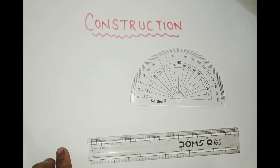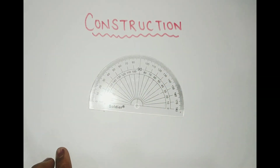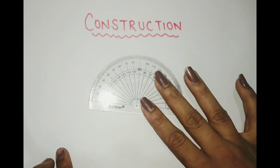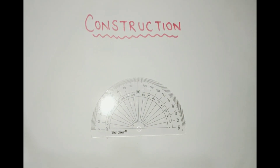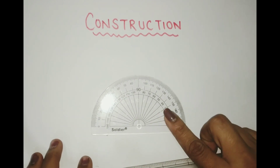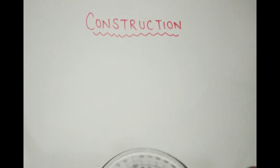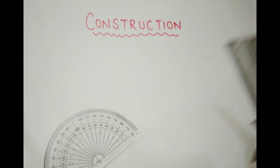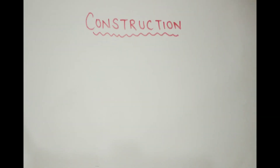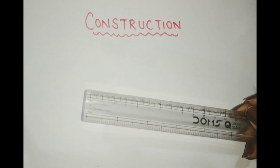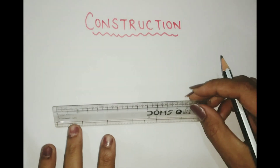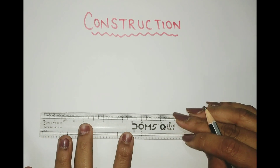Using a protractor is for junior students. If you want to know how to construct angles with a protractor, this is very simple. At the same time, this video is all about how to do construction using a compass. So first I'll show you how to draw certain angles with the help of a protractor, which is very simple.